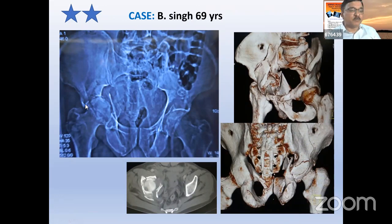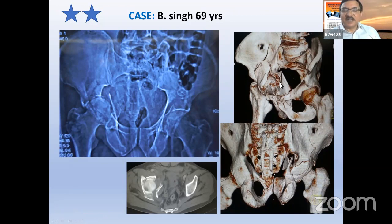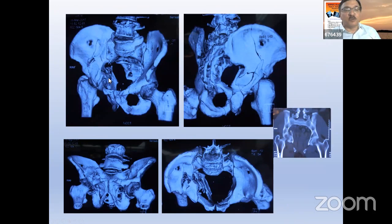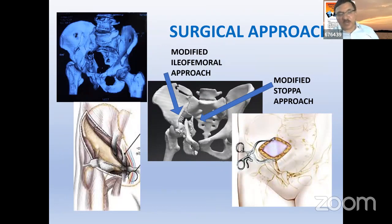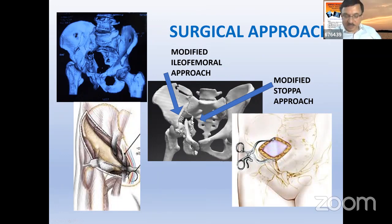Fourth case: a 69-year-old with significant comminution. The sourcil position is assessed — normal on one side, displaced on the other. There is comminution that cannot be addressed from the superior approach alone, requiring an additional Stoppa approach to access the medial side. Posteriorly the fragments fall back into position with traction. A T-plate buttresses the supraacetabular area from the iliofemoral approach; then the Stoppa approach addresses the medial comminution, with posterior column screw and anterior column buttressing. At three months the patient can sit up.